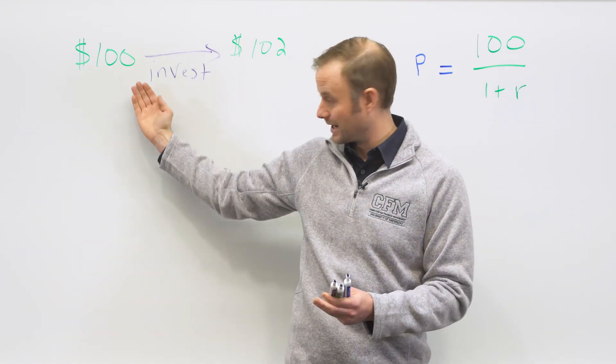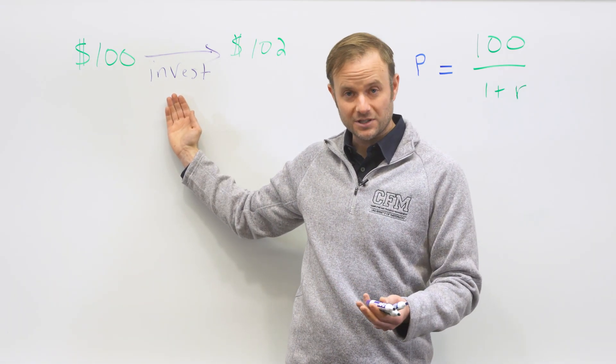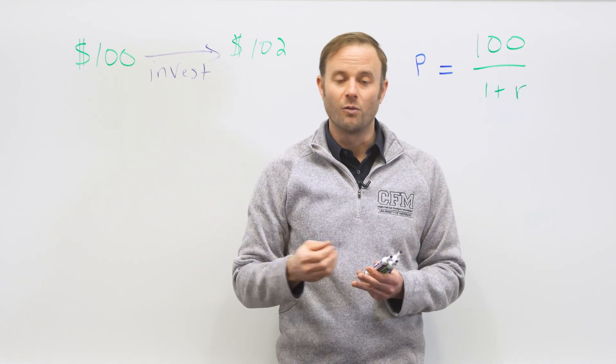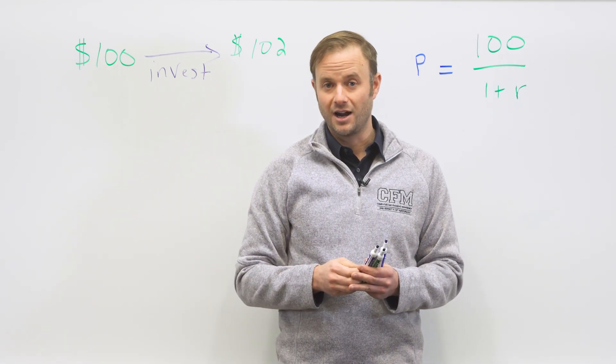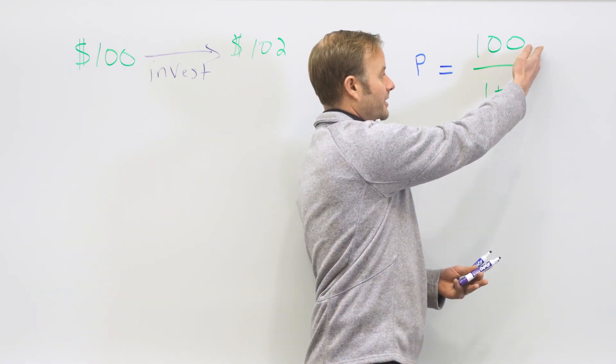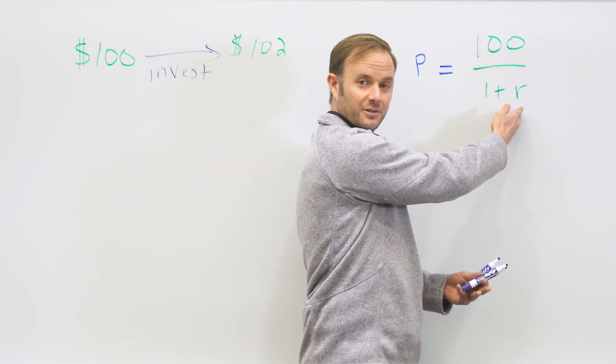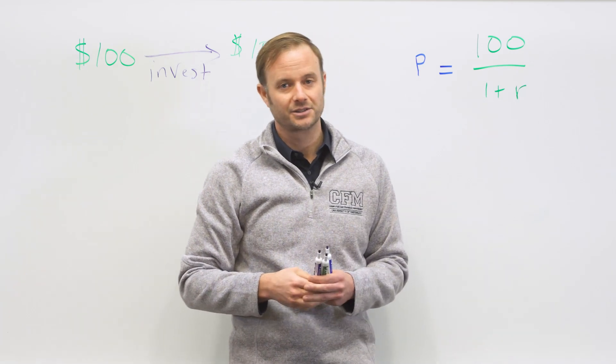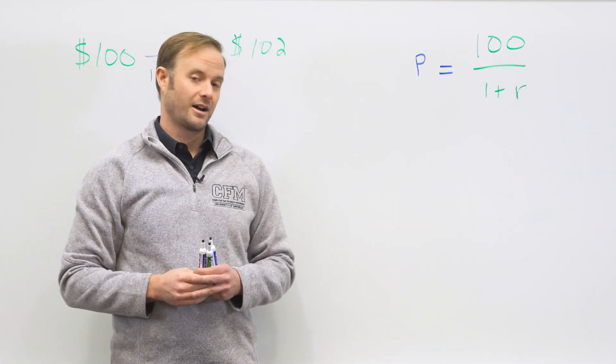In the case of this example here, r would be 2%. So if I want to know the value of $100 in one year's time, it's 100 divided by 1.02 or approximately $98. That would represent our price.